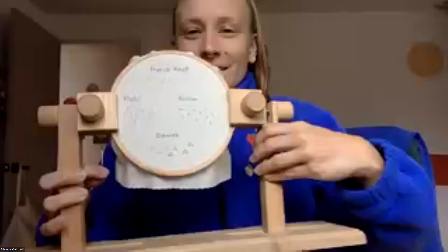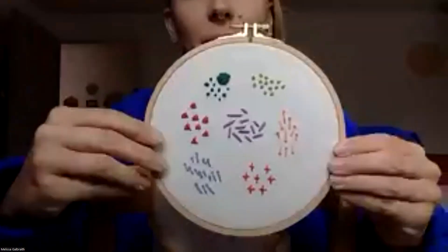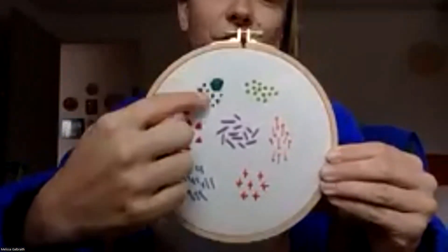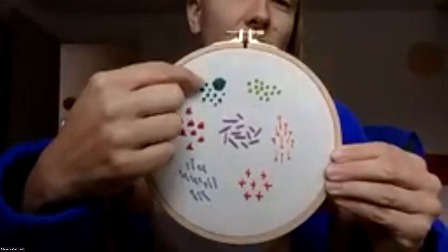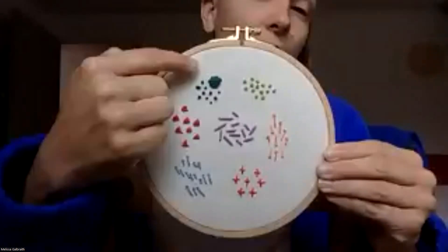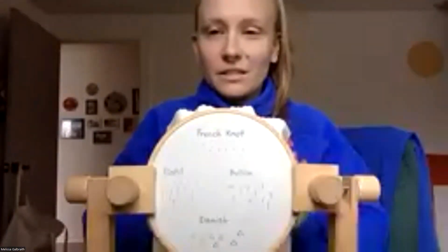Now that we have a knot at the end of our thread, let's make some knots on the front of our fabric too. We are going to start with the French knot today. You can see these green stitches here — that's the French knot. It's kind of like a little dot that sits raised on the front of your fabric. You can do them individually or use them to fill in a shape or space. I love it because it's really textural.